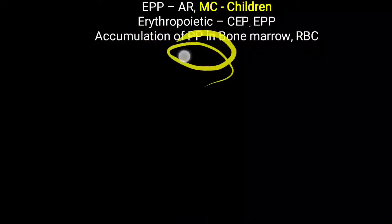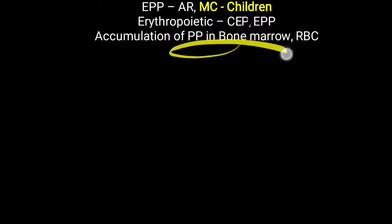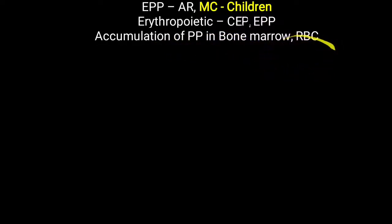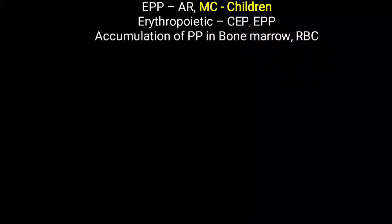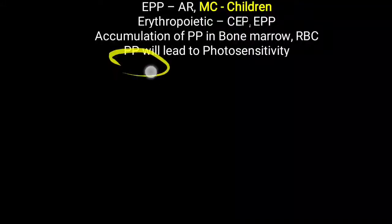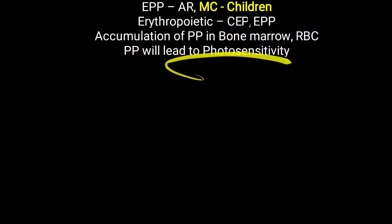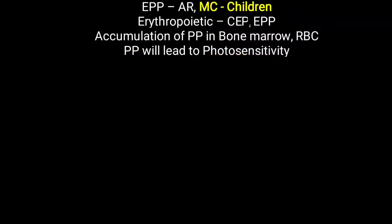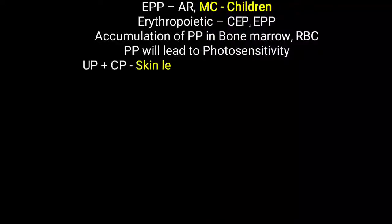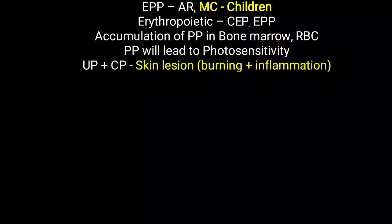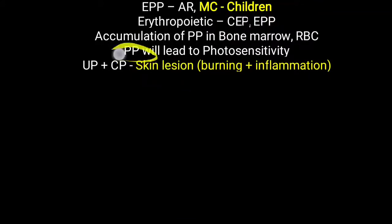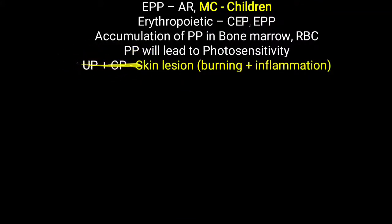Protoporphyrin accumulates in the bone marrow and is further seen in the RBCs. It can also be seen in blood capillaries and even in the skin. This protoporphyrin leads to photosensitivity, particularly when exposed to sunlight. Even a small exposure to sunlight will lead to skin lesions. As a feedback inhibition, erythropoietic porphyrin and coproporphyrin are also sometimes seen as accumulated.